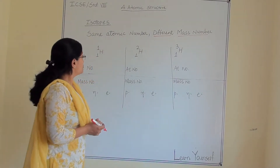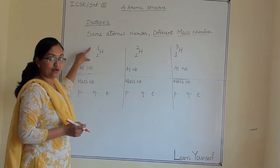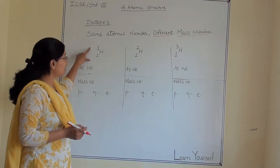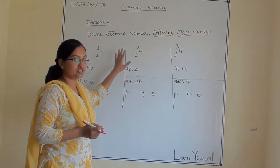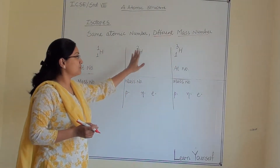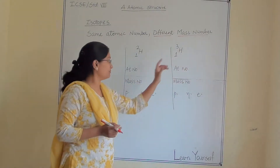Here is a basic example using hydrogen. There are three isotopes of hydrogen: the first is protium, the second is deuterium, and the third is tritium.